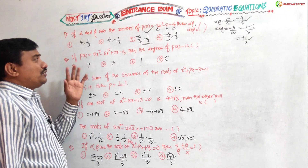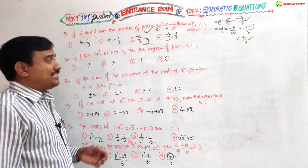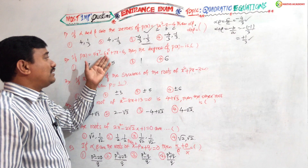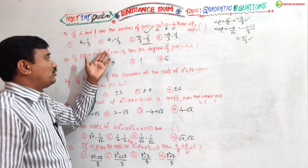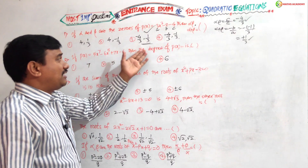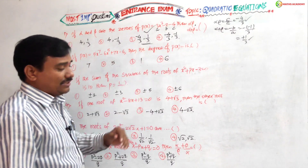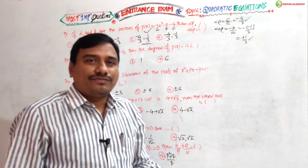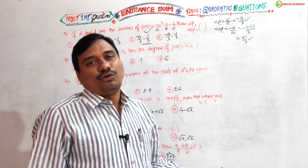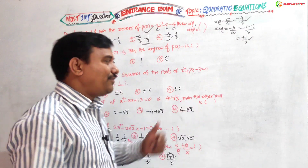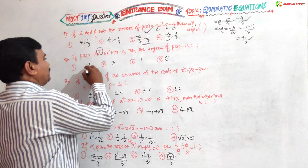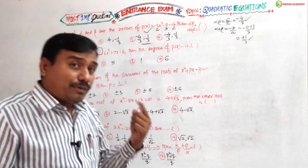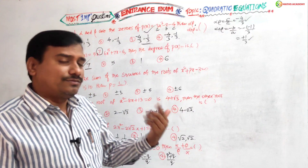Second question: P of X equals 5x to the power of 5, 7 minus 6x to the power of 5 plus 7x minus 6. Then find the degree of P of X. The degree is the highest power of the polynomial. This is the degree.